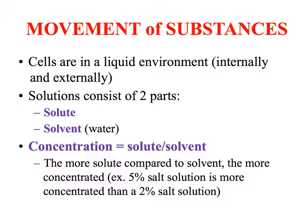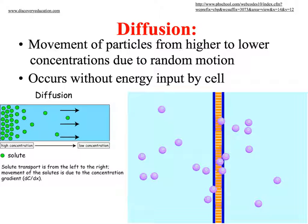The more solute in a solution, the more concentrated it is. A five percent salt solution is more concentrated than a two percent salt solution. Diffusion is a simple process — going from where there's a lot of something to where there's less. Molecules naturally move from higher concentration to lower. This does not require energy; it is a natural, free process because you're going with the flow.